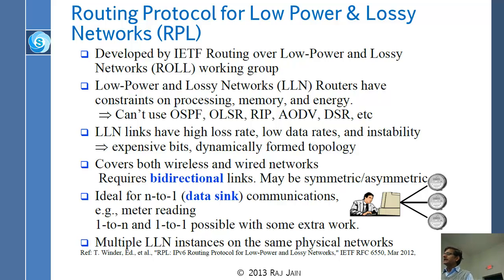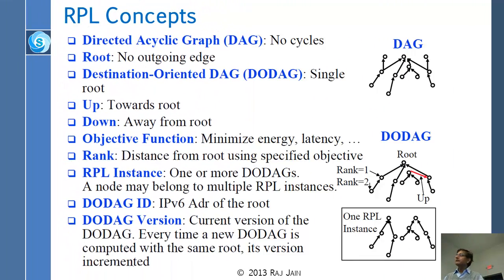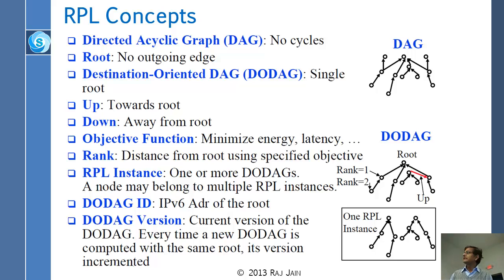The 'one' in N-to-1 cannot be just a meter — it has to be something connected to the rest of the world. Multiple RPL instances can exist on the same physical network, with different destinations. Now let me introduce some concepts. First: DAG — Directed Acyclic Graph. Directed means there are arrows; acyclic means there is no cycle. If you have a Destination-Oriented DAG, meaning there is one destination that everybody wants to reach, it is called a DODAG.